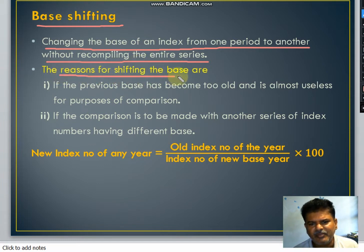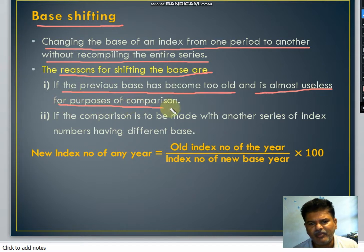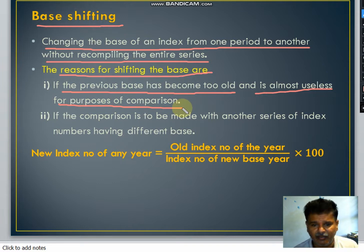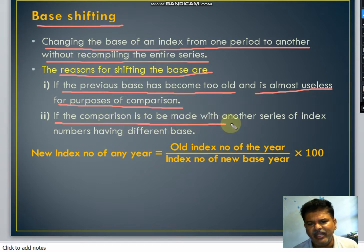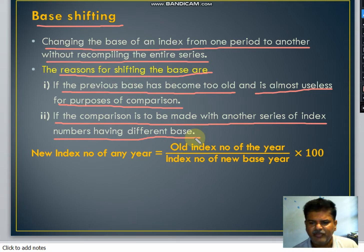What are the reasons for shifting the base? There are two reasons. One is if the previous base has become too old and is almost useless for purposes of comparison — if it is not possible to compare the current period with this old base period. Another reason is if the comparison is to be made with another series of index numbers having a different base.